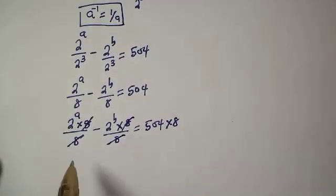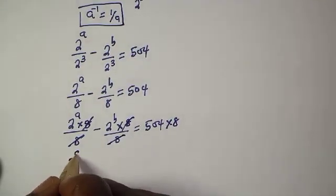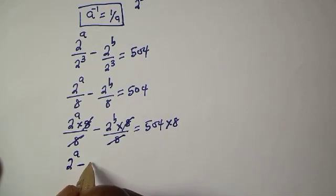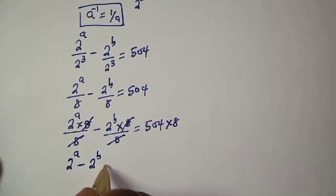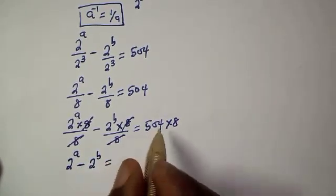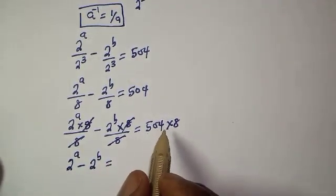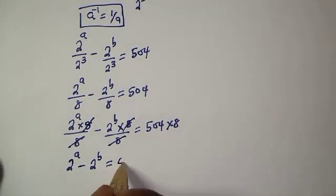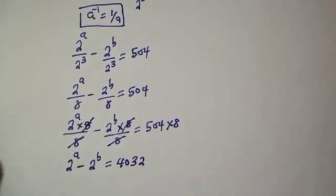We have 2 raised to power a minus 2 raised to power b is equal to 504 times 8, which is 4032.